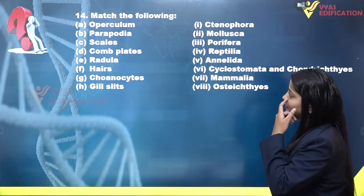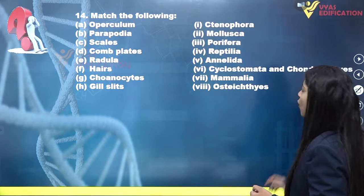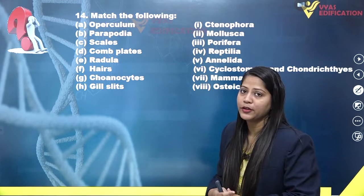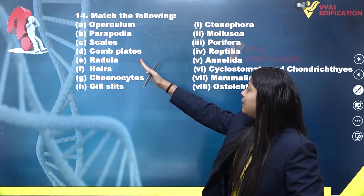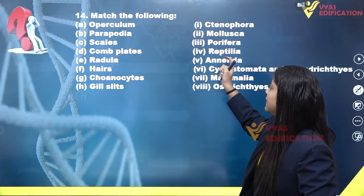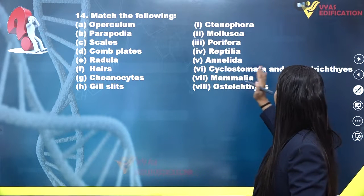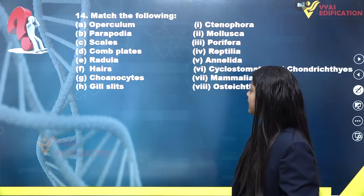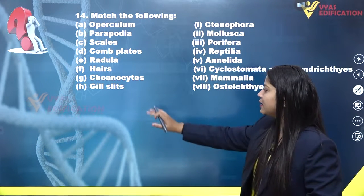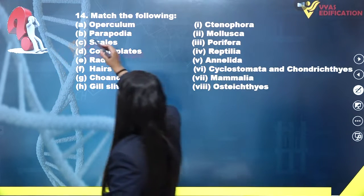Let's move on to the next question: match the following. In column one we have options: operculum, parapodia, scales, comb plates, radula, hairs, choanocytes, and gill slits. In column two we have: Ctenophora, Mollusca, Porifera, Reptilia, Annelida, Mammalia, Cyclostomata, and Chondrichthyes. We need to match each term with the correct group.